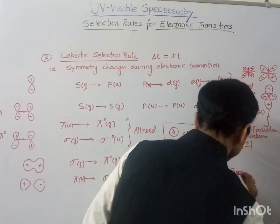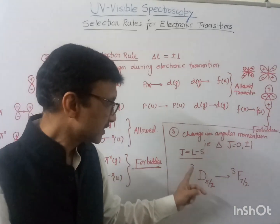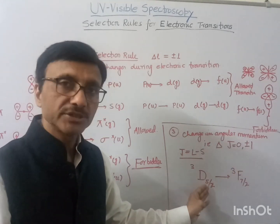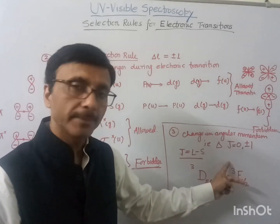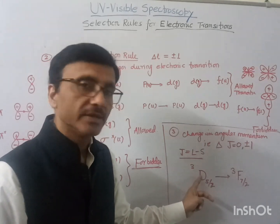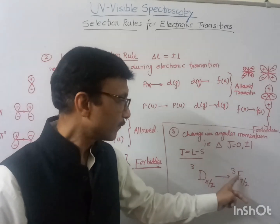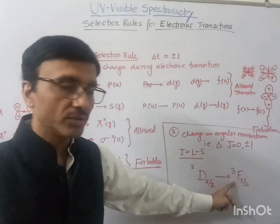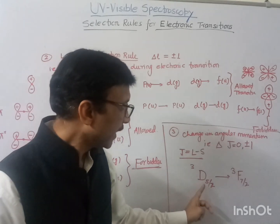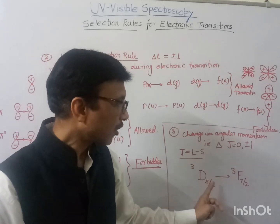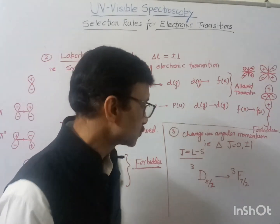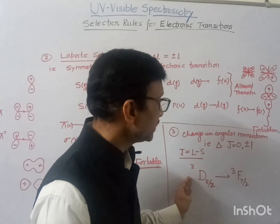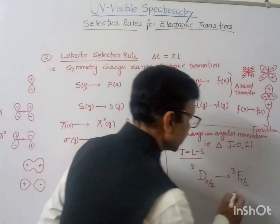For example, consider a D to F transition. The total spin multiplicity remains the same and symmetry also changes, since for D, L equals 2, and for F, L equals 3. The change in J works out to 7/2 minus 5/2 equals 1, so the change in angular momentum is plus 1. Therefore, this transition is said to be allowed according to all three selection rules.